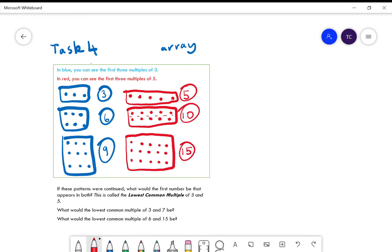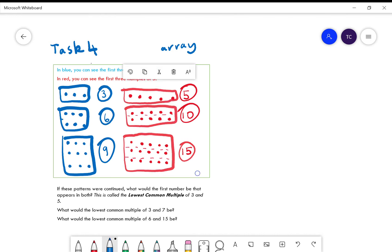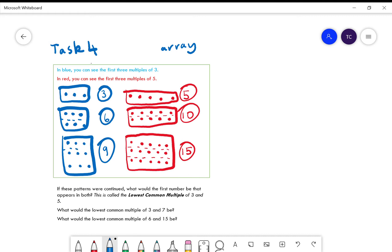Hopefully what you can see here is we've got different rows going on. Maybe you've spotted this already, maybe you've not, but for your multiples of three you're adding on three extra each time.